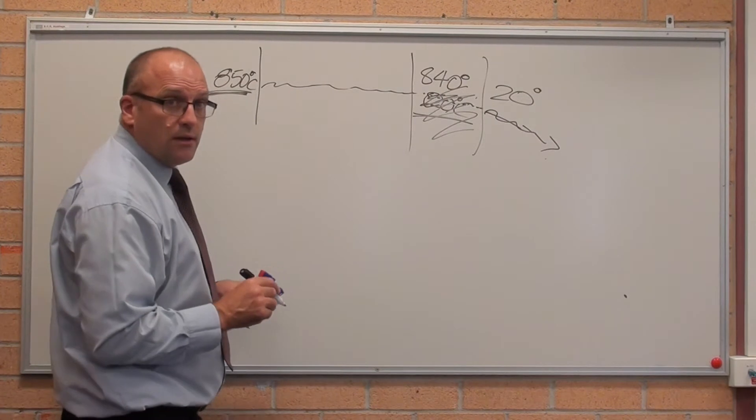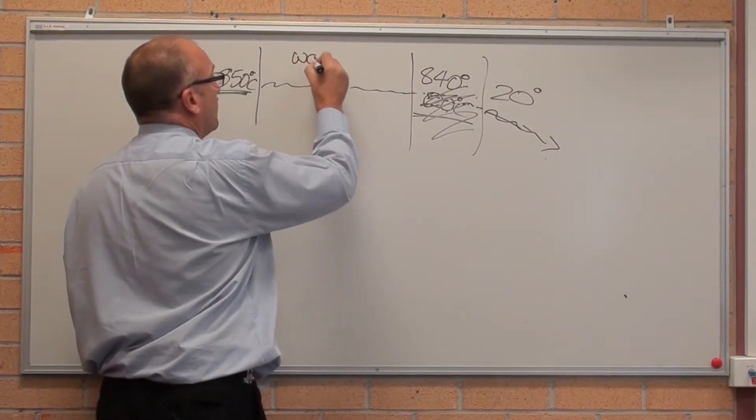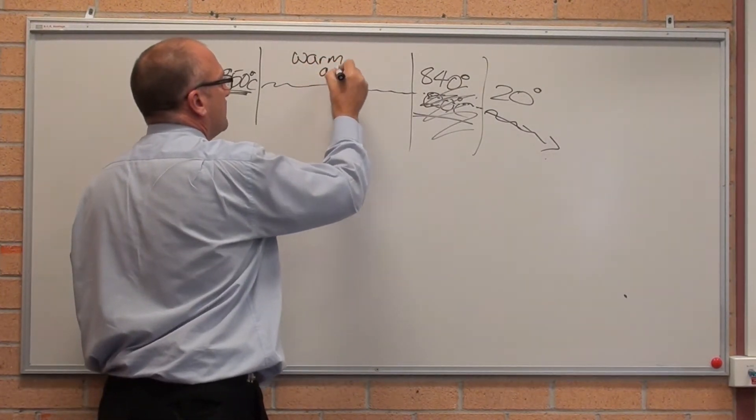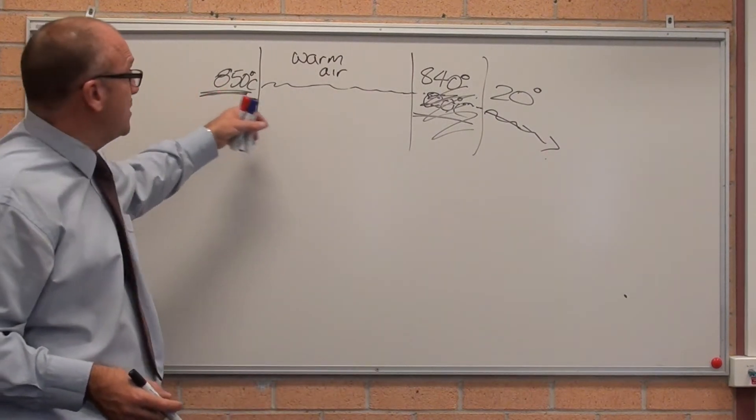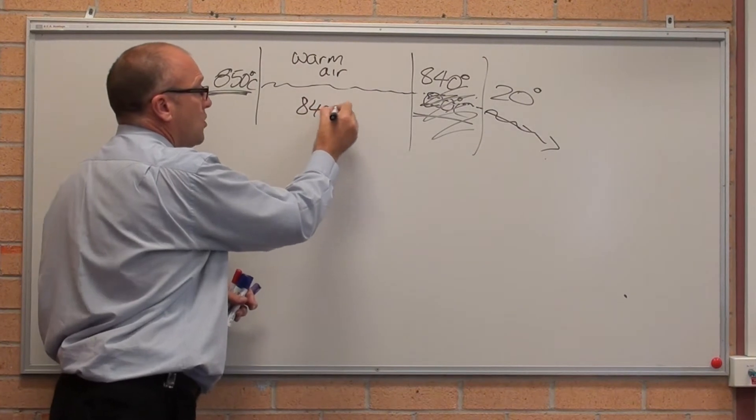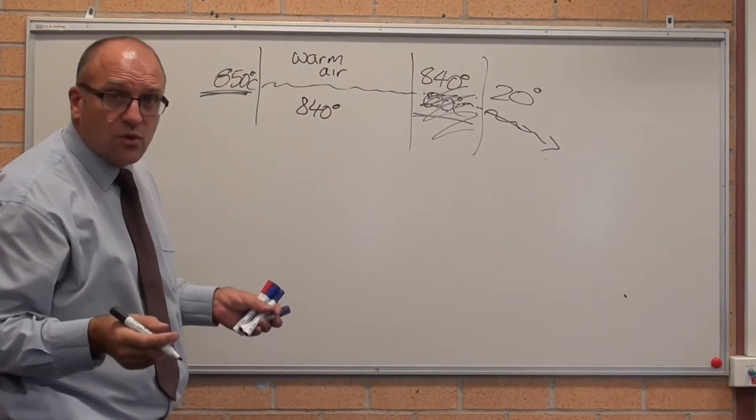So the slowest cooling is warm air. Because obviously you can't cool down 850 degrees if you're 840 degrees in here, can you? So it doesn't cool down too quickly.